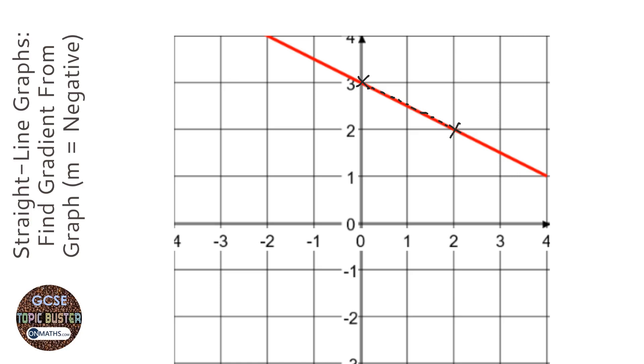And we draw a little right-angled triangle between the two, and we work out how much it's gone down or up, where it's gone down one, and how far it's gone to the right, where it's gone to the right two.